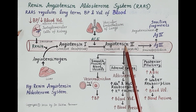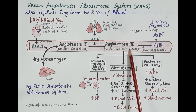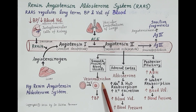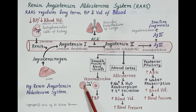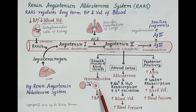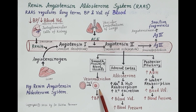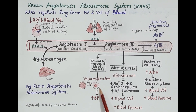A fall in blood pressure or blood volume induces a rise in the secretion of Angiotensin 2. Angiotensin 2 is a very important vasoconstrictor — it constricts the blood vessels. Look at this figure: this is a normal blood vessel with its lumen. When constricted by Angiotensin 2, the lumen reduces — this is vasoconstriction — and vasoconstriction causes a rise in blood pressure.